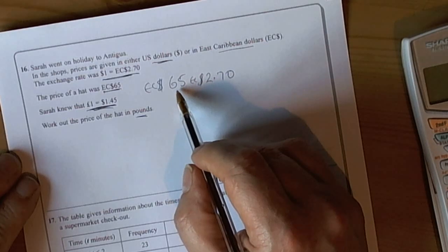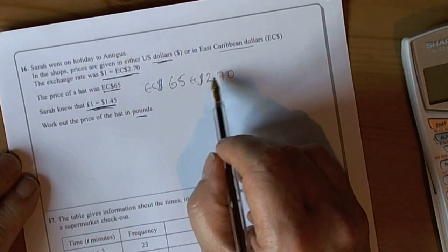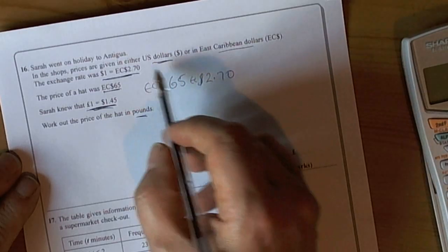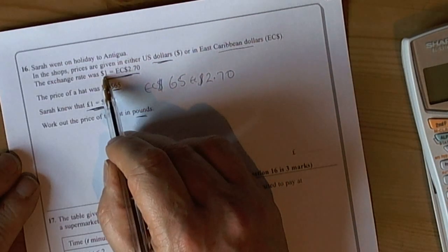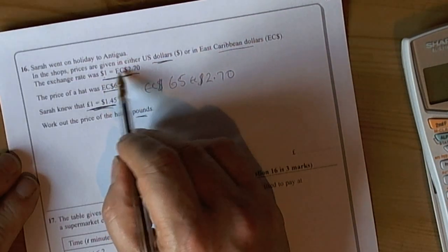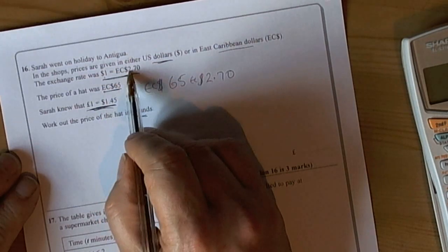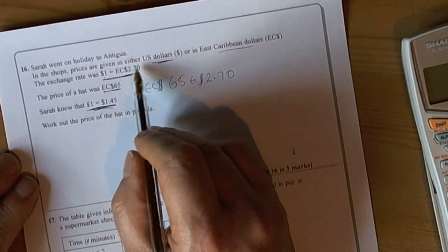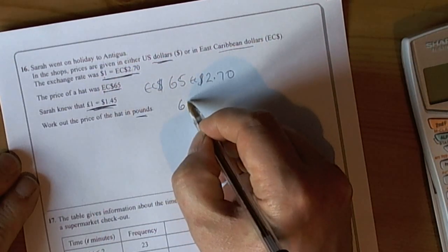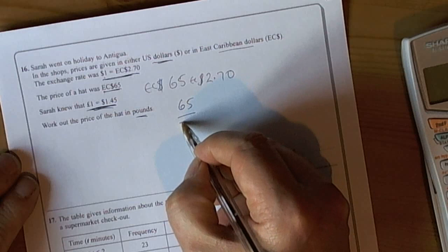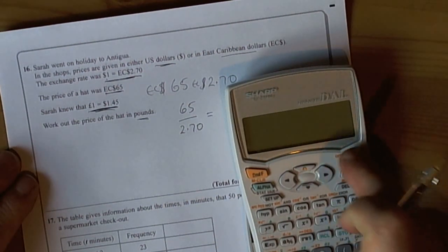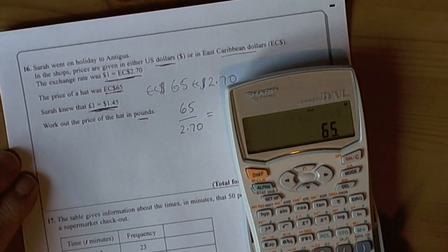You could ask yourself what operation to use - timesing or dividing or adding or subtracting. For every US dollar you're getting 2.7, so multiplying by 2.7 would be appropriate to go to Caribbean dollars, but we want to go the other way around. So the sum we're going to end up doing is 65 divided by 2.7. With our calculator, 65 divided by 2.7 equals...